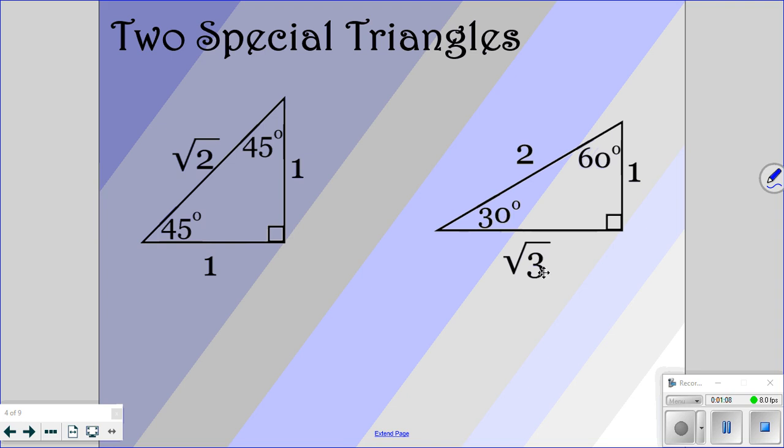The 30 degrees and the square root of 3 are adjacent to each other. Okay? So if you don't remember those from previous years, you do need to learn them.